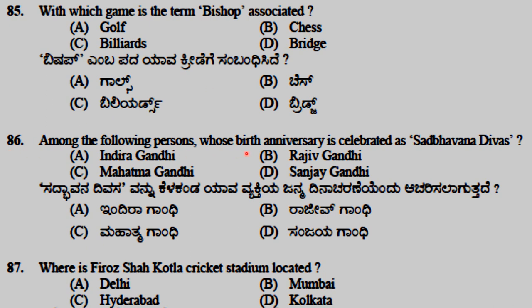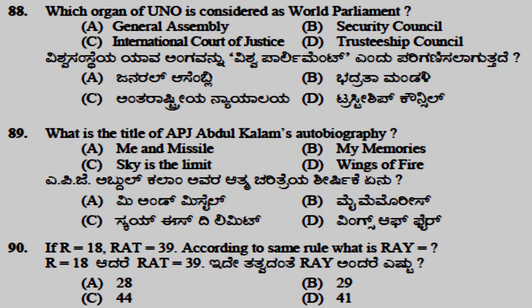Rajiv Gandhi's birthday anniversary is celebrated as Sadbhavana Divas. The Feroz Shah Kotla Cricket Stadium is located in Delhi. The General Assembly of the UNO is considered the World Parliament. The title of Abdul Kalam's autobiography is 'Wings of Fire'.